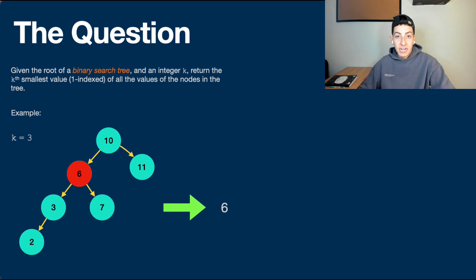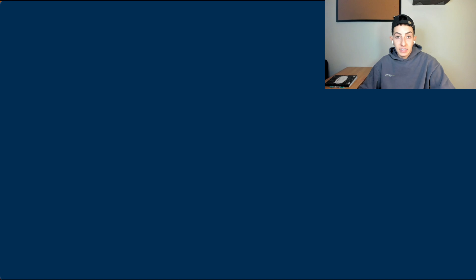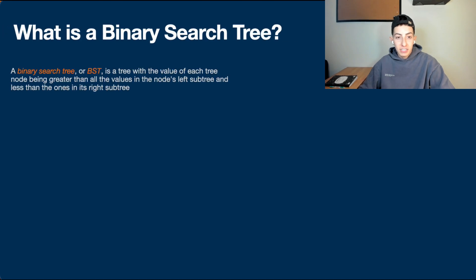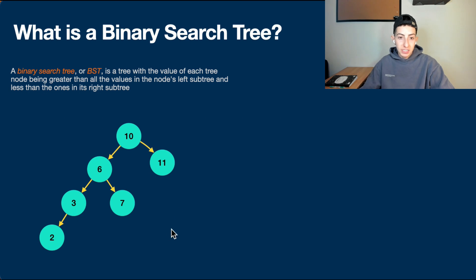Let's get into what a binary search tree is if you need a refresher. A binary search tree, or BST, is a tree where the value of each node is greater than all the values in the node's left subtree and less than the ones in its right subtree. Here in our example, every node in 10's left subtree is less than 10 and every node in its right subtree is greater. The same is true for 6, 3, and so on.